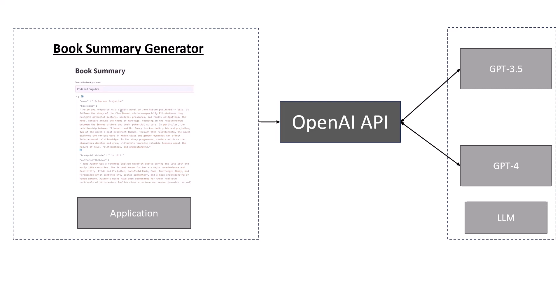As I write the name of the book — for example, Alchemist — the book summary generator application makes a call to the OpenAI API, and the OpenAI API internally makes a call to the large language model, either GPT 3.5 or GPT 4. They provide the summary of the requested book, and I display that summary in the book summary generator application. So book summary generator is just an application, while GPT 3.5 and GPT 4 are the large language models.